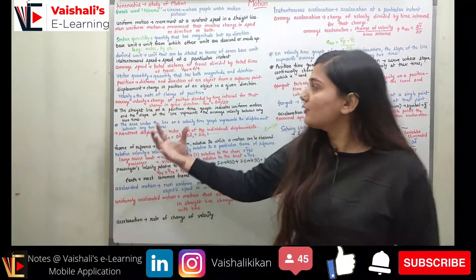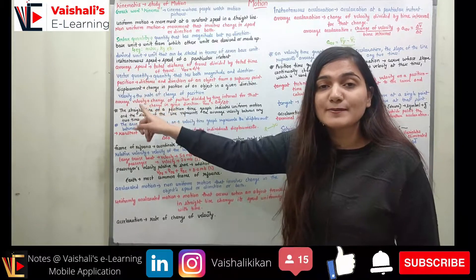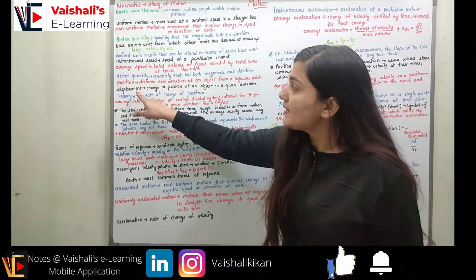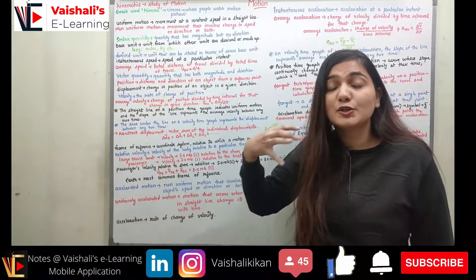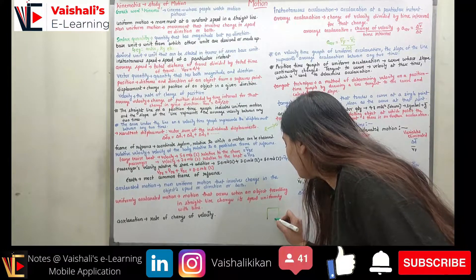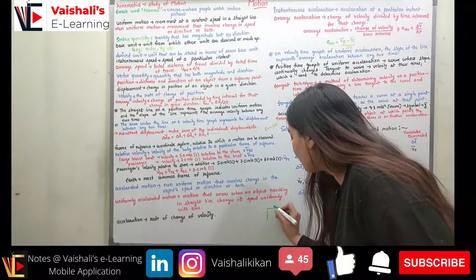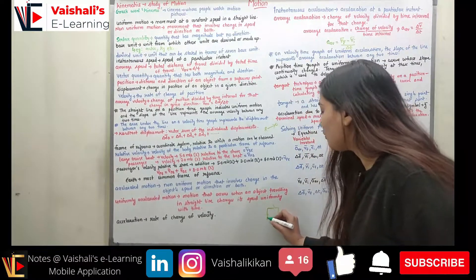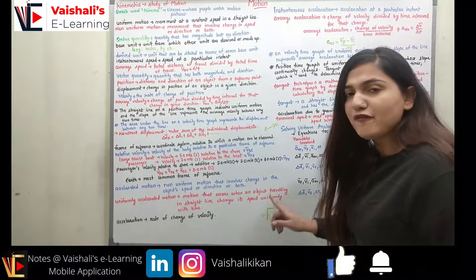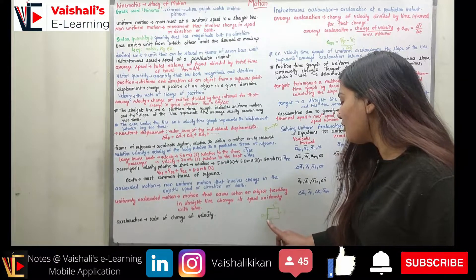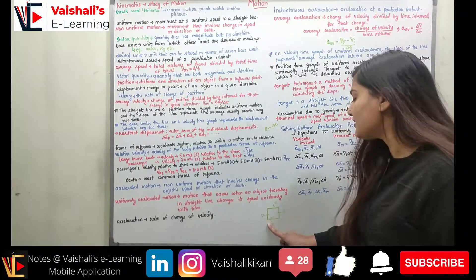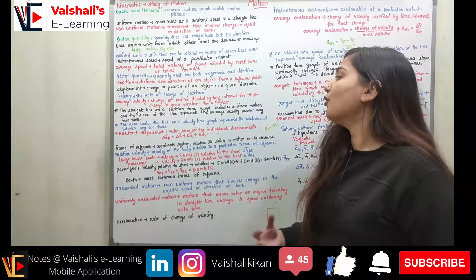Displacement is the change in position of an object in a given direction — it is a vector quantity. It is different from distance traveled. For example, if you move a, a, a, and a kilometers in all four directions of a square and return to the starting point, total distance is 4a km but displacement is 0, since initial and final points are the same.